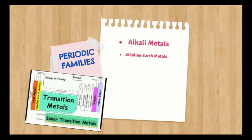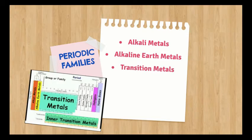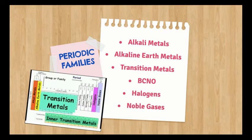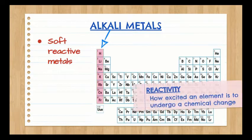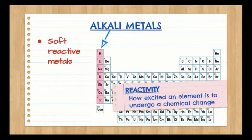The alkali metals are soft reactive metals. What is reactivity you may ask? Well it measures how excited an element is to undergo a chemical change. Anyway, alkali metals become more reactive and softer as you move down the group, making francium the most reactive metal.